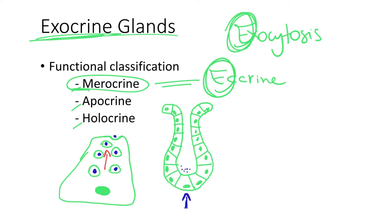And then this chemical product now here may go through the duct or ducts, depending on the structure of the exocrine gland, and then it reaches its final destination.